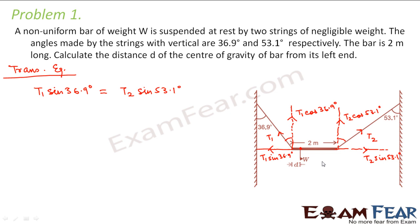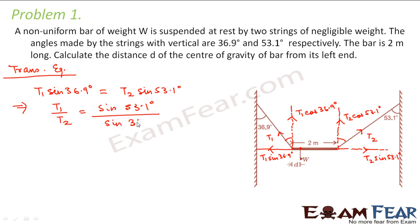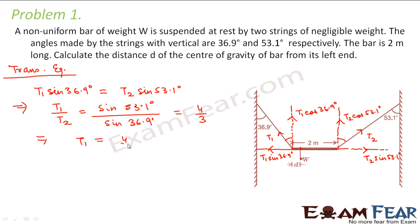If their magnitudes are equal, the net force will be zero. From this we get T1/T2 = sin 53.1° / sin 36.9° = 4/3. Therefore T1 = (4/3)T2. This is the first relationship obtained from translational equilibrium.